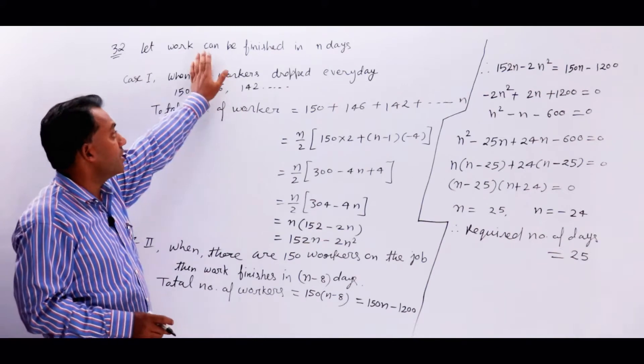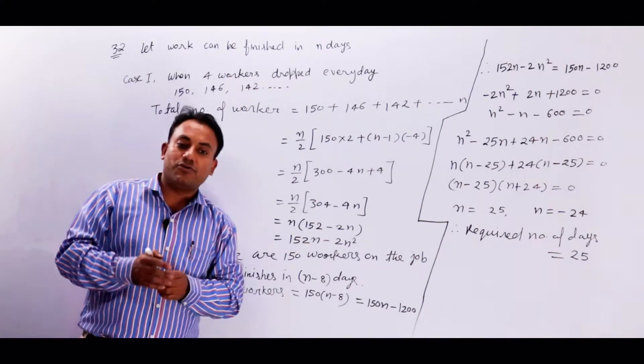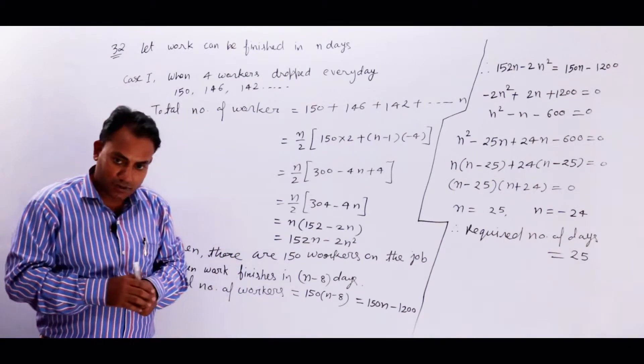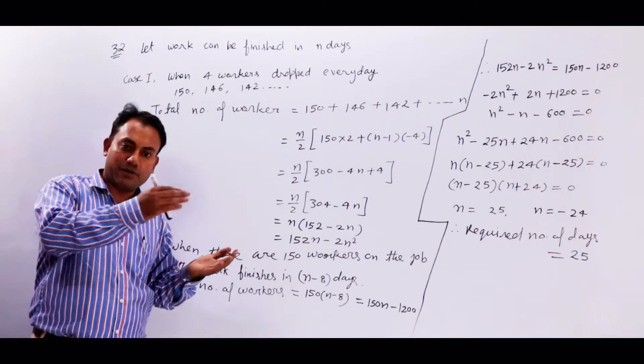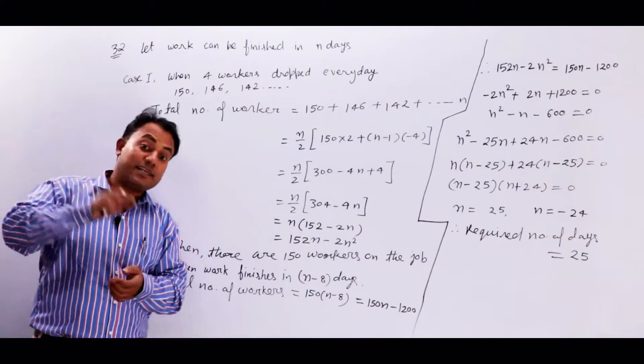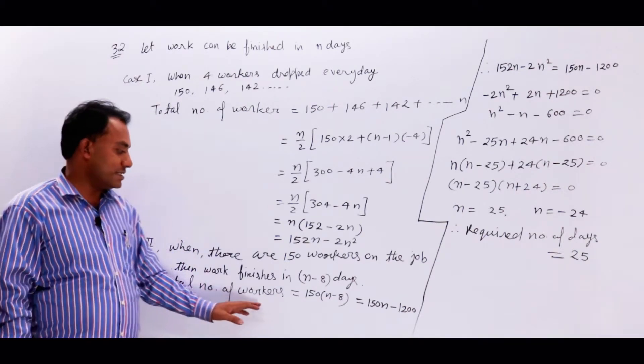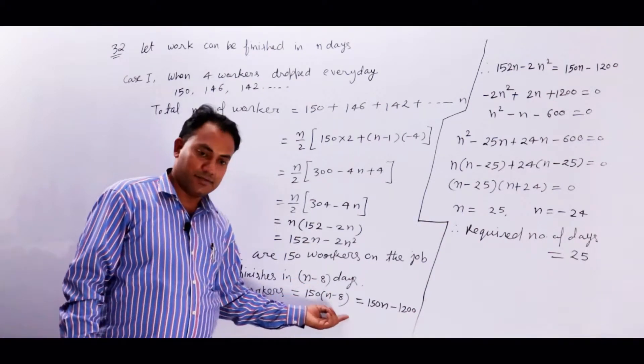So when workers come not to come, n minus 8 days finish. So here per day workers how many? 150. How many days? n minus 8 days. So we can tell total number of workers, 150 into n minus 8.